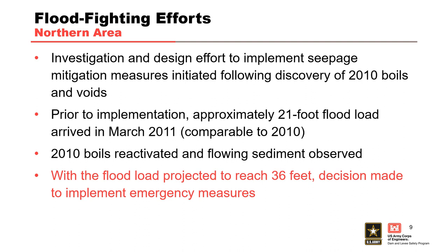Following the discovery of extensive sand boils and voids in 2010, a fast-tracked geotechnical investigation and design effort for seepage mitigation measures was initiated. In March 2011, before permanent measures could be designed and built, the Mississippi rose to 98.95 feet, resulting in a differential loading of 21 feet — comparable to 2010. The boils discovered in 2010 were reactivated and sediment was observed flowing out of them. With the river projected to rise to produce an additional 15 feet of flood load, the decision was made to implement emergency measures.